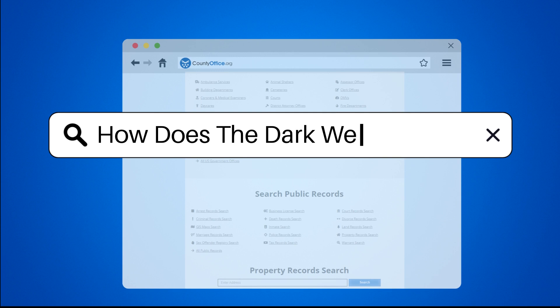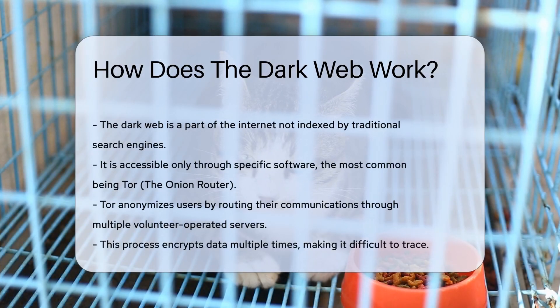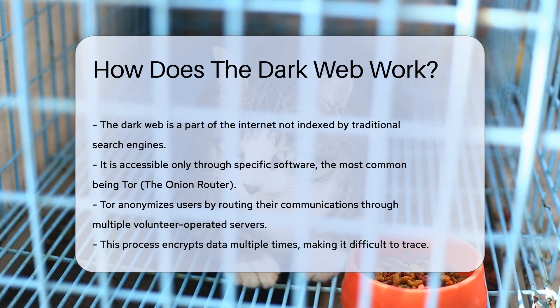How does the dark web work? The dark web is a part of the internet that is not indexed by traditional search engines. It is accessible only through specific software, the most common being Tor, the onion router.